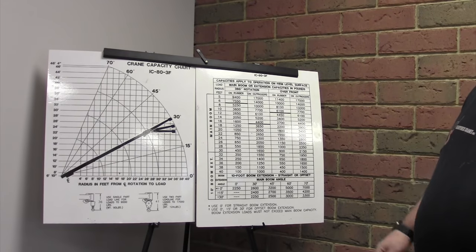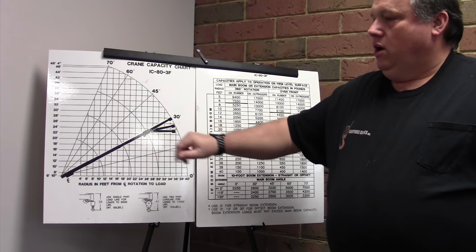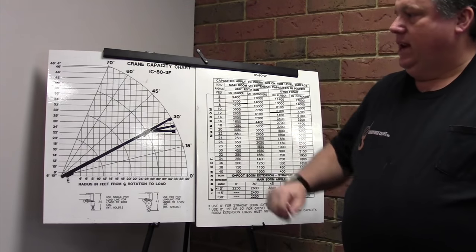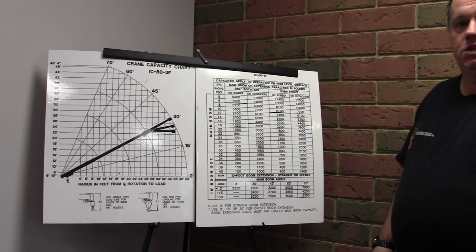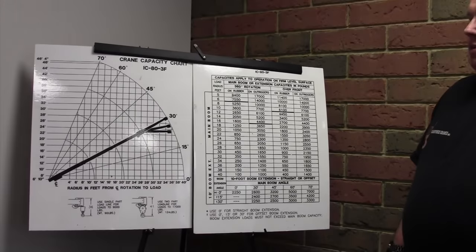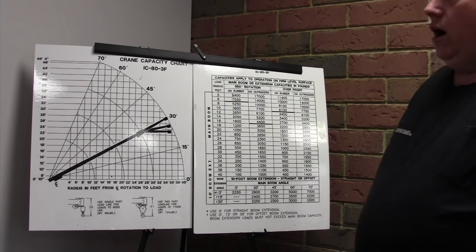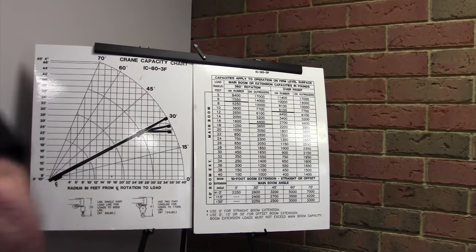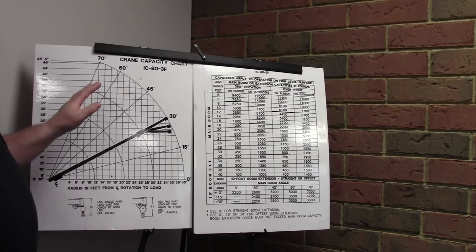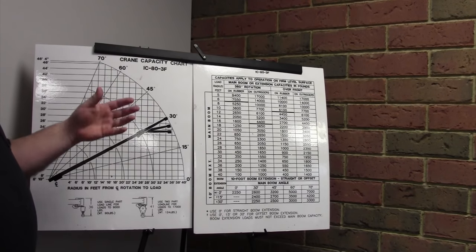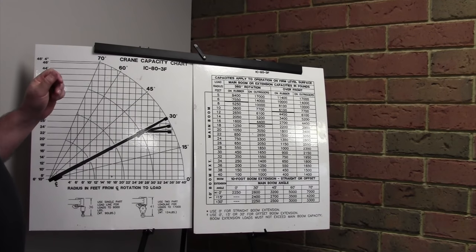First of all, we want to talk about load radius. There are two things up on the board. The first is the graphic representation of what the crane looks like with the boom at different lengths and at different angles, and over here is the chart used to interpret the graphic representation so we can calculate the load capacity of the crane. These particular charts are from a Brodersen IC83F. Each individual crane will have its own load chart — we're not giving you a one-size-fits-all chart, but explaining how load charts are used and how they are calculated.